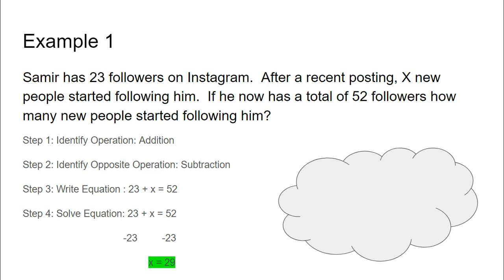But for these, since we have word problems, we have to translate and conceptualize what does 29 mean. So that's our last piece, is we have to remember to interpret the answer in the context of the problem. 29, in this case, means 29 new people started following him. So he has 29 new followers.